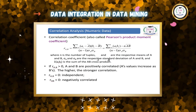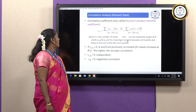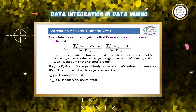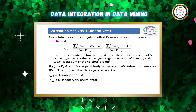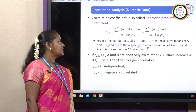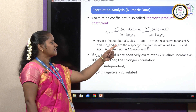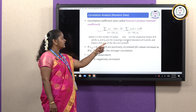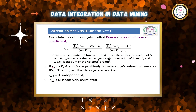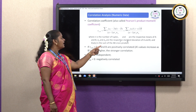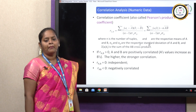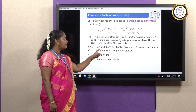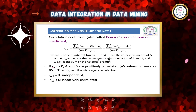Correlation analysis for numeric data uses the Pearson product-moment coefficient. The formula is: R(A,B) = [Σ(AᵢBᵢ) − n·Ā·B̄] / [(n−1)·σA·σB], where n is the number of tuples. If R(A,B) > 0, as the A value increases, so does B — the higher the value, the stronger the correlation.